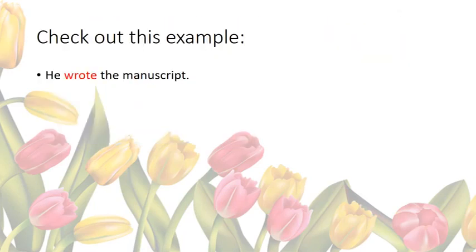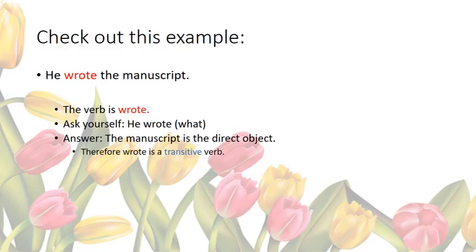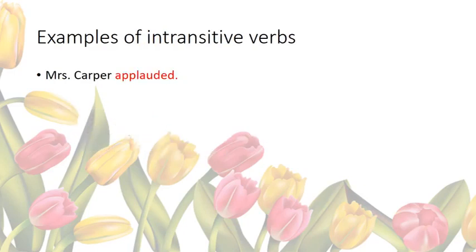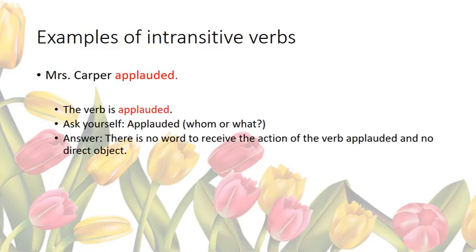Another example: 'he wrote the manuscript' — the verb is 'wrote.' Ask yourself: he wrote what? The answer is 'the manuscript,' which is the direct object, so 'wrote' is a transitive verb. For an intransitive verb: 'Mrs. Carper applauded' — the verb is 'applauded.' Ask yourself: applauded whom or what? There is no word to receive the action, no direct object, so 'applauded' is an intransitive verb.